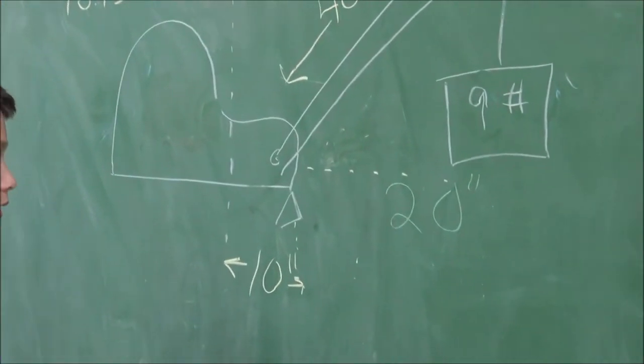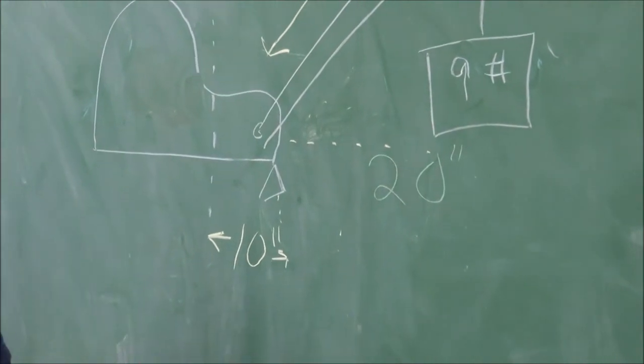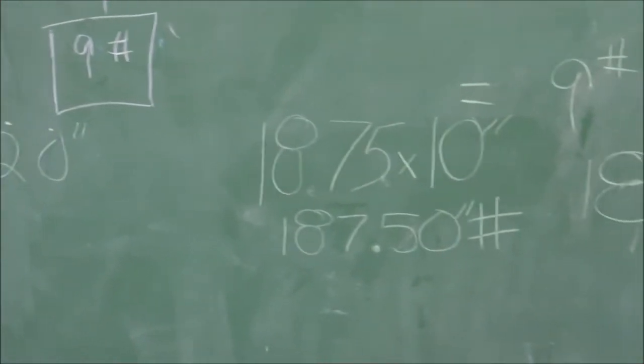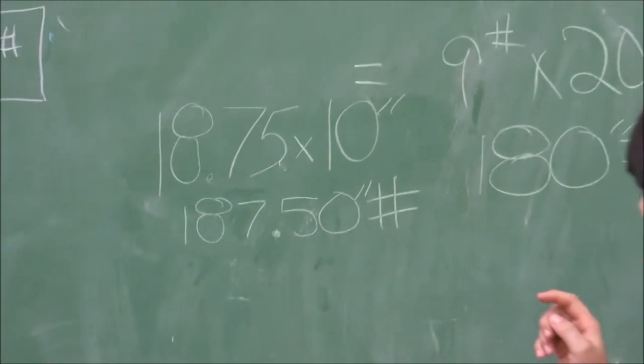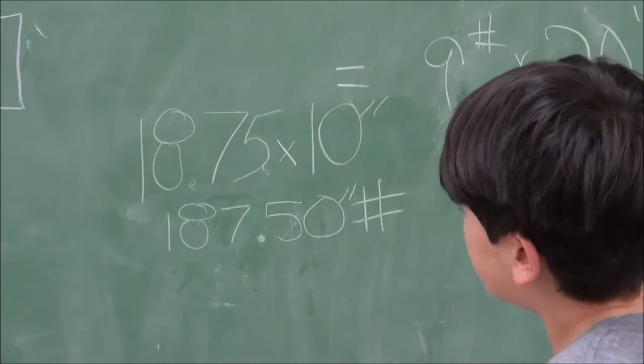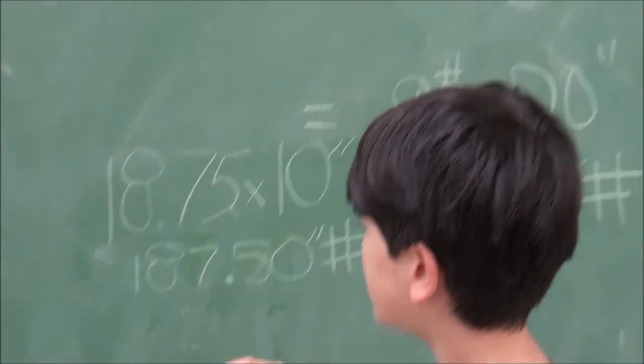And the distance from the center of gravity to the pivot point is 10 inches. So we got those numbers. Weight times distance, right? Weight times distance equals torque.